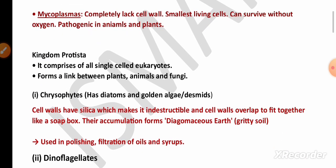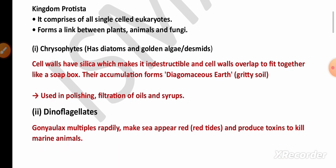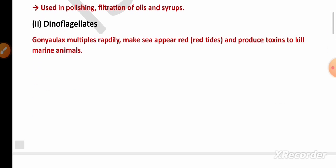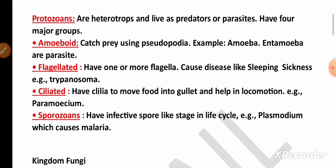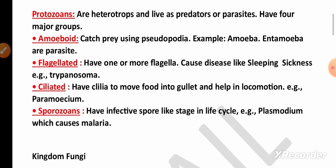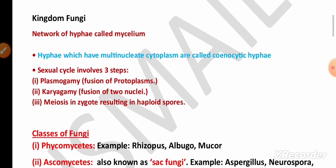Remember the definition and importance of mycoplasma. In Kingdom Protista, remember that chrysophytes form diatomaceous earth and its uses. Dinoflagellates form red tides — remember that. Then remember the definition and classification of protozoa, which is very important for five marks.